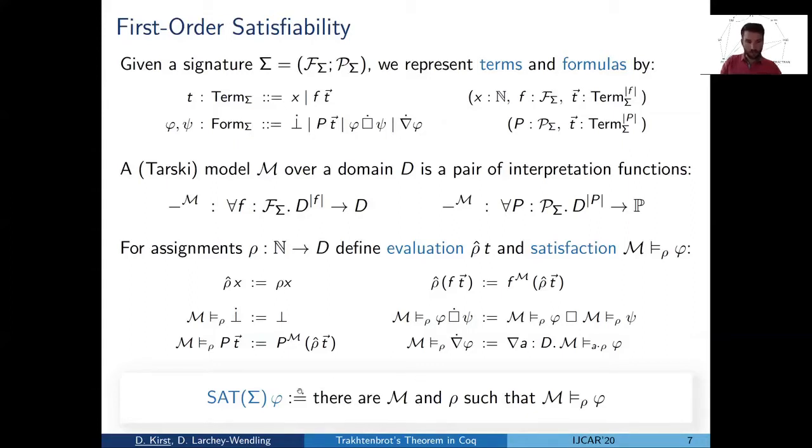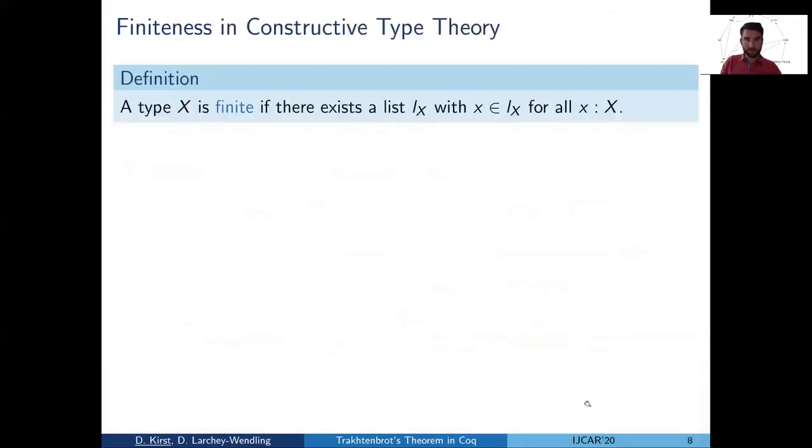With this definition, we can already give a formal definition of satisfiability parametric in the signature sigma. We just ask whether there is a model and a variable assignment satisfying a formula.